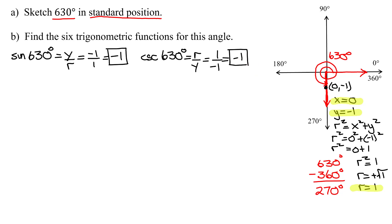So there are the first two trig functions. Now the cosine of 630 degrees is x over r, x is 0, it's 0 divided by r is 1, which is 0.